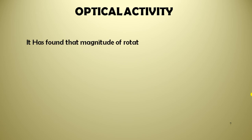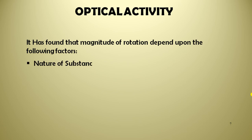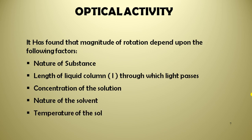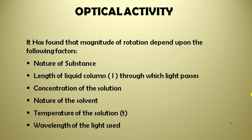It has been found that the magnitude of rotation depends upon the following factors: the nature of the substance, the length of the column through which light passes, the concentration of the solution, the nature of the solvent, the temperature of the solution, and the wavelength of the light used. Depending on these factors, the rotation of your plane polarized light gets affected.